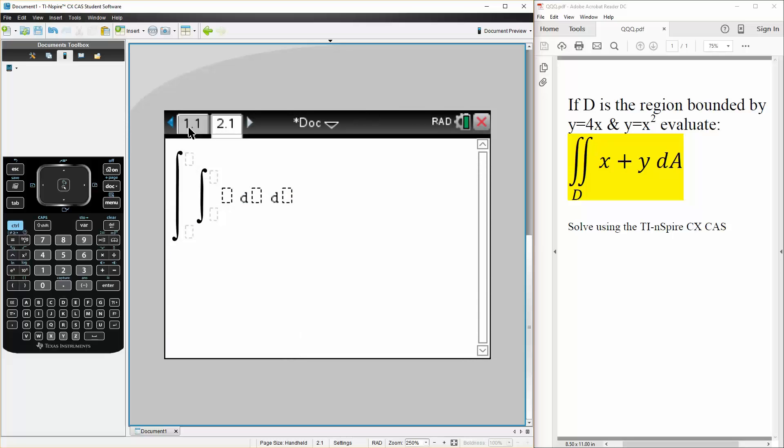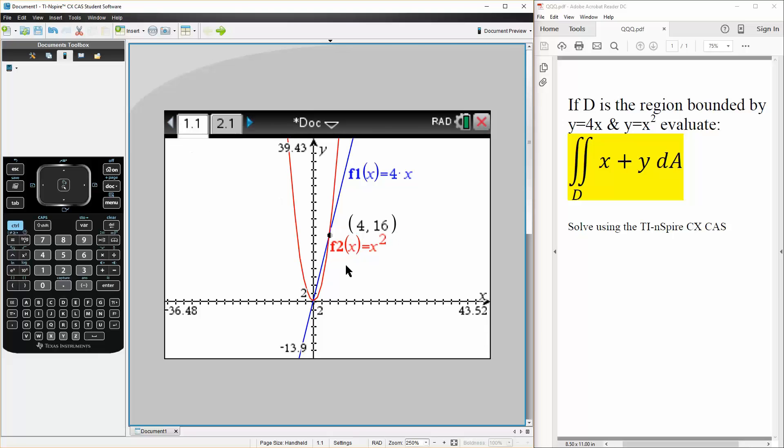Based on the graph here, we can do it in terms of, let's say, dy dx. And if we do a dy dx, the outside term will be x, so that can be 0 to 4.